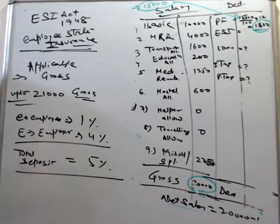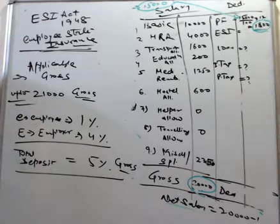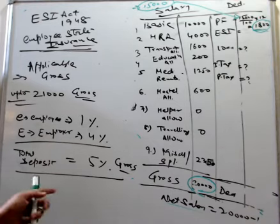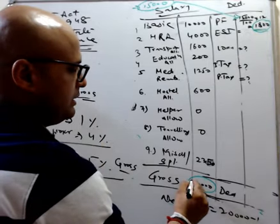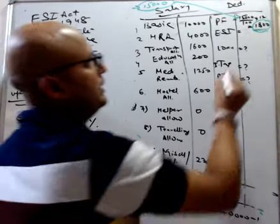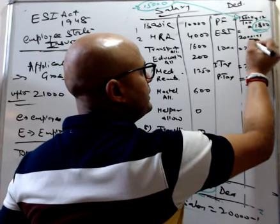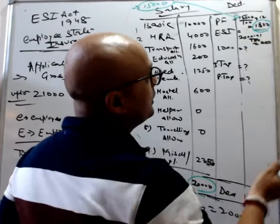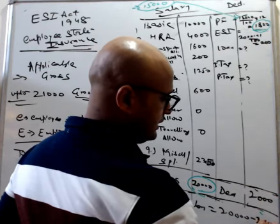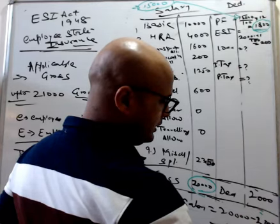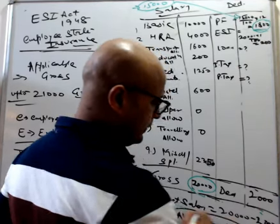Gross card clear. So now 1% of ESI employer 20,000 into 1 by 100 comes out 200. So 800 over 200, so 2,000 minus 18,000. Next is the house.